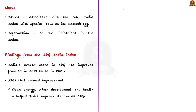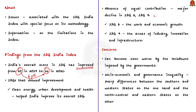According to the latest NITI Aayog SDG Index 2020-21, India's overall score in Sustainable Development Goals has improved from 60 in 2019 to 66 in 2021. However, there is an absence of equal contribution from all 17 Sustainable Development Goals in improving the overall score. Goals like Clean Energy, Urban Development and Health helped India improve, whereas other important goals like Industry, Innovation and Infrastructure did not improve. Sustainable Development Goal 8, which indicates work and economic growth, has actually shown decline, which could be dangerous — the situation could worsen given lockdowns imposed to tackle COVID-19.